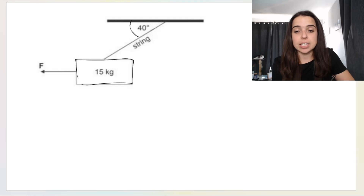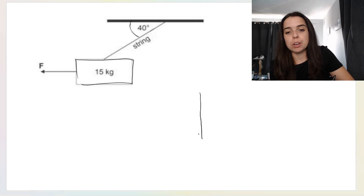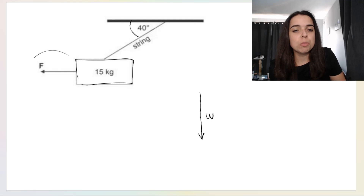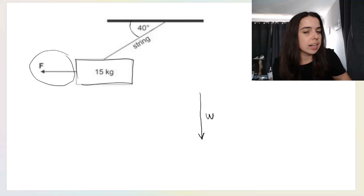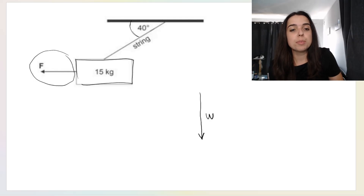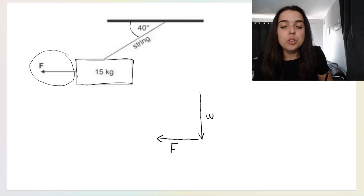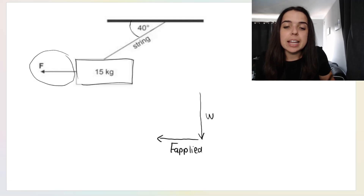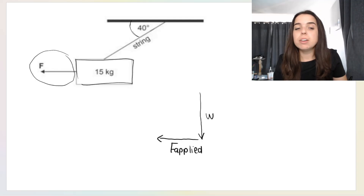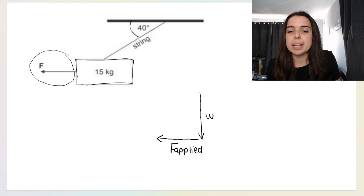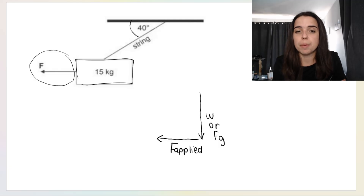I would start with weight, because I always know weight points straight down. Then I do the applied force next — it's the second easiest because it goes along the x-axis, and it's pointing to the left. You can label it F or force applied. Instead of labeling the weight arrow W, you can also label it FG for force of gravity.